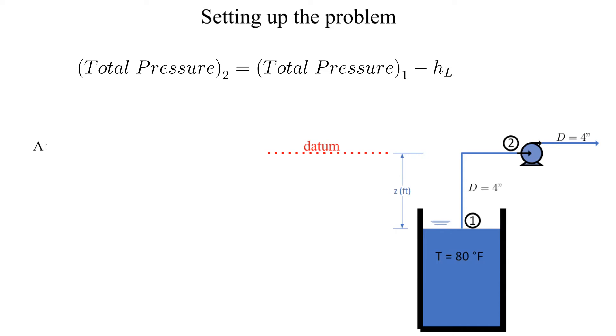What do we know about point one? We know the absolute pressure, the velocity which is zero, and since the data is selected at the pump the elevation at point one is minus z which is the unknown.